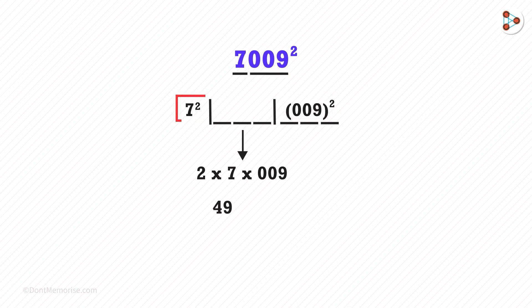So, we have 7 squared which is 49. The product of the middle part is 126. And on the right side, we have 081.